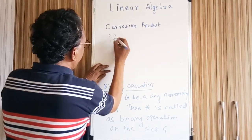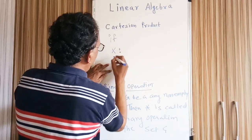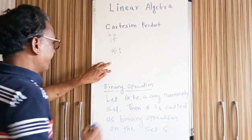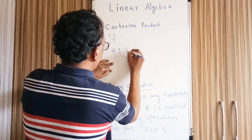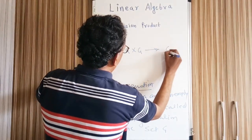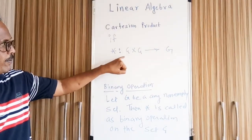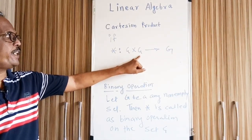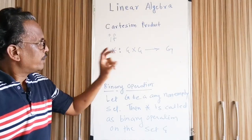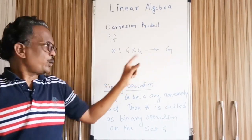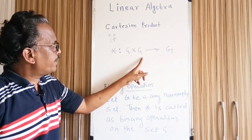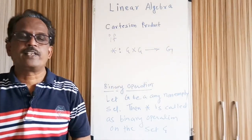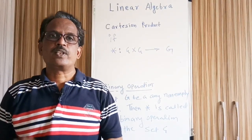Star is called a binary operation on set G if star is a mapping from G cross G to G. The meaning hereby is: I am picking one element from set G and another element from set G, and the result of this binary operation falls in the set G itself. You choose one element from here, choose one element from here, perform this operation — the result of the operation should fall in the same set. Then star is called binary operation on the set G.